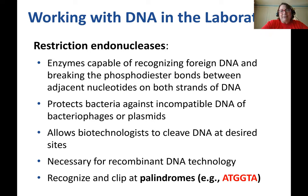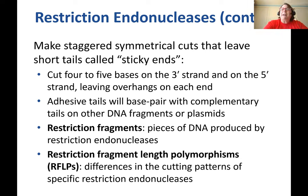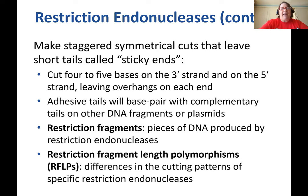All restriction endonucleases recognize a DNA sequence called a palindrome — meaning it reads the same forwards and backwards. For example, 'mom' — M-O-M — reads the same in each direction. In DNA, a sequence like ATGGTA would be the kind the restriction enzyme recognizes. They don't cut evenly through the DNA; they make staggered cuts, leaving short tails called sticky ends on each side of the cut — four to five bases on each strand — leaving single-stranded overhangs hanging off both ends of the cut.